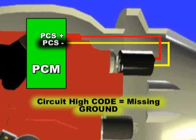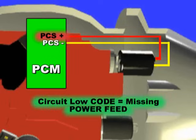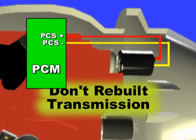A PCS circuit high code means that the ground is missing. A PCS circuit low code means that the power feed or 12 volts is missing. If you encounter these types of codes, including a circuit open or electrical code, do not rebuild or replace the transmission. Look for a broken wire, fuse, ignition switch or relay fault.